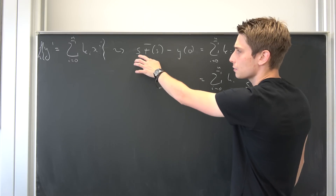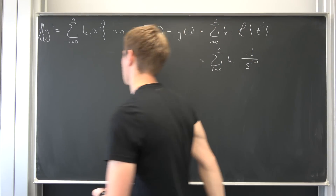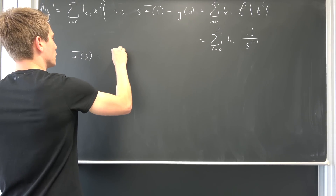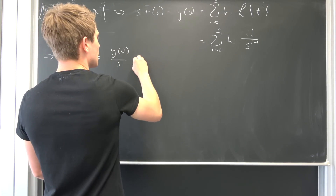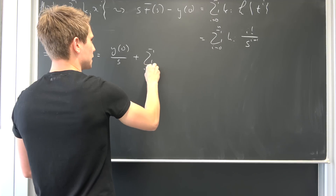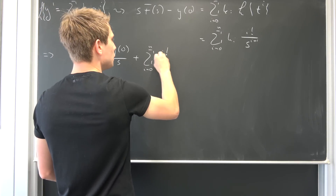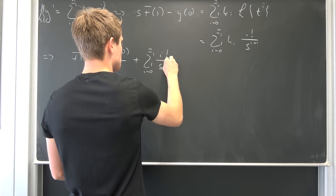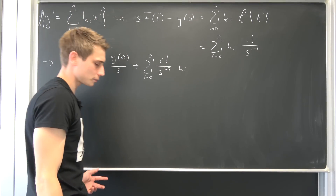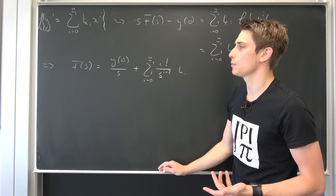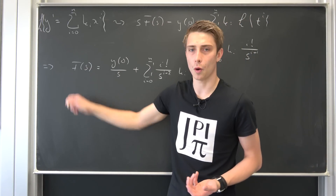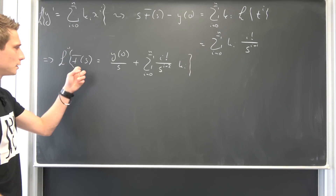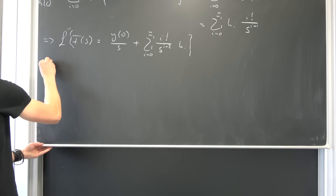Now we add y(0) to both sides and divide both sides by s (with s not equal to zero). That gives us an expression for F(s) equal to y(0) over s, plus the sum from i equals 0 to n of i factorial over s to the i+2 times k_i. Now we would like to use the inverse Laplace transform on both sides to get an expression for y with respect to t. Applying the inverse Laplace transform, the left-hand side gives us y(t).